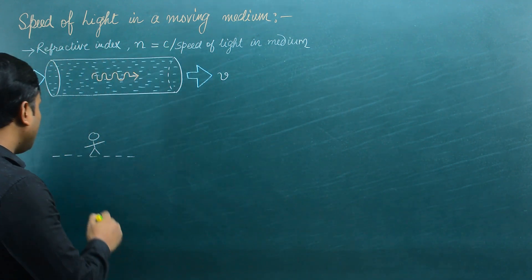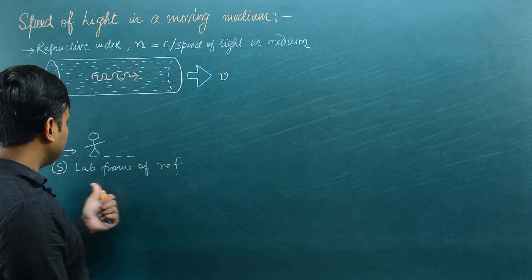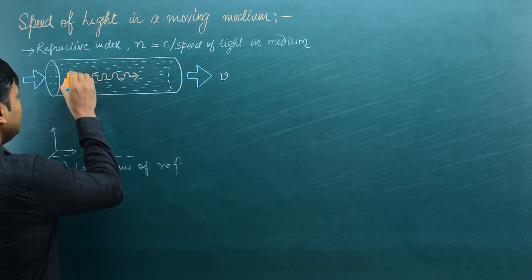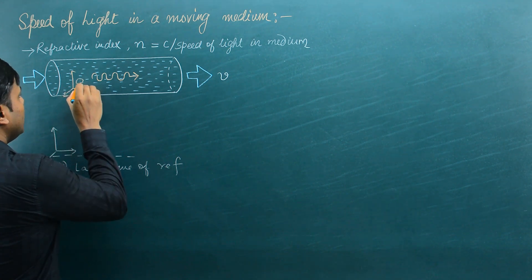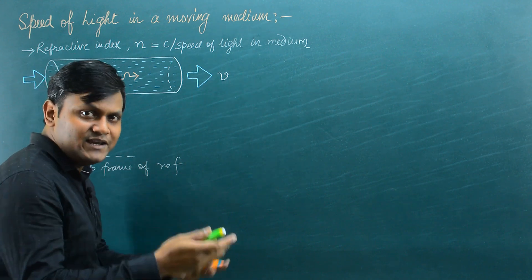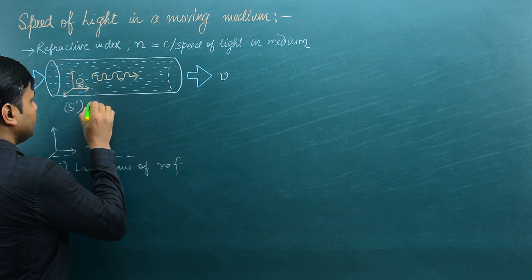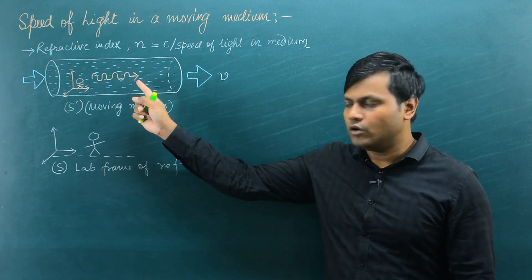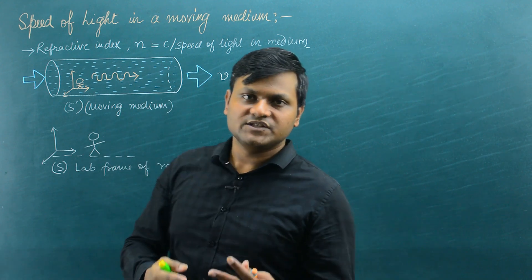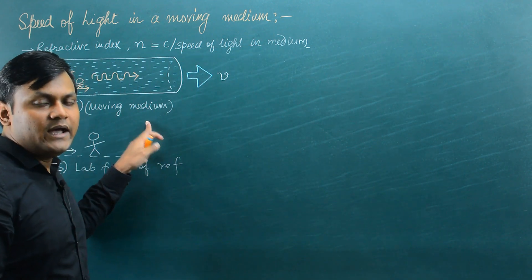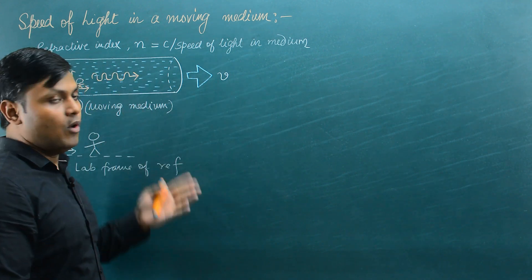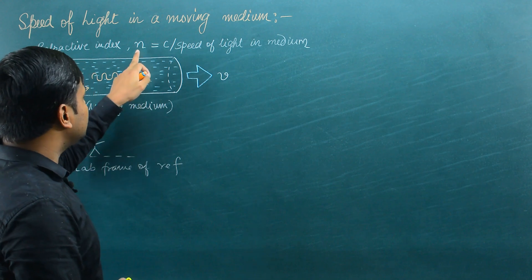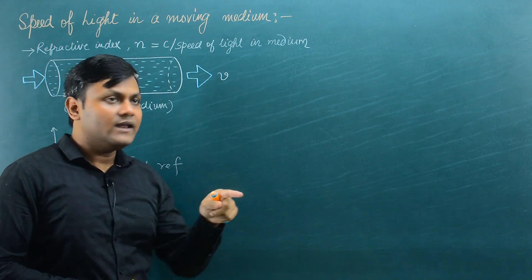I am going to associate a frame of reference S with the lab, and with respect to that lab frame the water body is traveling at velocity v. So I am going to call this water body the frame of reference S dash — an observer associated with the moving medium. I am interested in figuring out the speed of the light photon with respect to the lab frame, because I already know the speed of the light photon with respect to the medium. Any light photon traveling within a medium — whether water, glass, or any other substance — can be written in terms of its refractive index n.